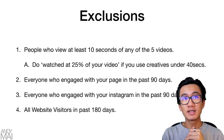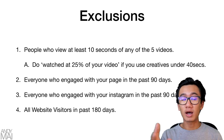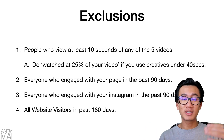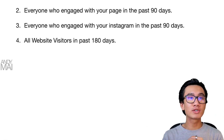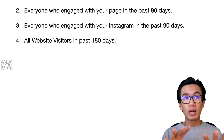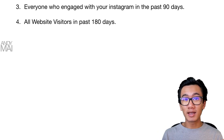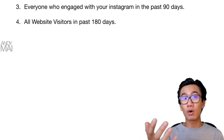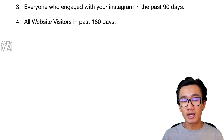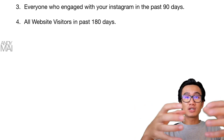You want to exclude everyone who viewed at least ten seconds of any of these five videos — or 25% of your video if the creative is under forty seconds — so that once people see the ad, they're put into a warm traffic funnel and won't see the cold traffic ad again. Two: exclude anyone who's engaged with your page in the past nine days. Three: exclude anyone who's engaged with your Instagram in the past nine days. Four: exclude all website visitors in the past 180 days. I only want brand new qualified users who haven't visited my website.